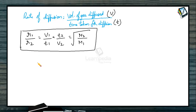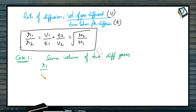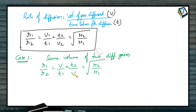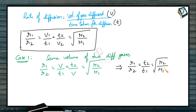Let us take two cases. In the first case, under similar conditions, if the same volume of two different gases diffuses in different time intervals, then R1/R2 = (V/T1) × (T2/V) = √(M2/M1). Since the same volume is diffusing, it cancels out, giving R1/R2 = T2/T1 = √(M2/M1).